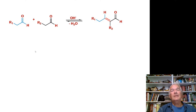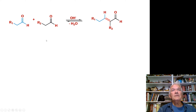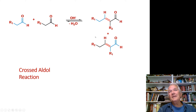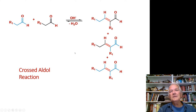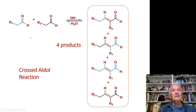We've talked about aldehydes reacting with themselves. What if you want to react one aldehyde with a different one — adding two different R groups? This is called a crossed aldol reaction. The problem is it can go either way: either aldehyde can form the enolate, and each enolate can react with either aldehyde — including itself. With two different aldehydes, you can get four different products, making this basically useless.